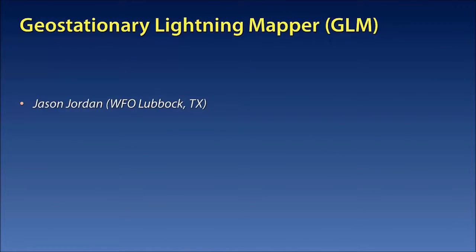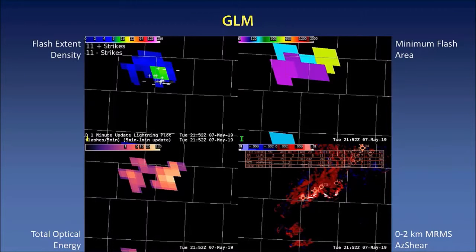Up next we have Jason Jordan from the WFO in Lubbock, Texas, and he will be talking about the Geostationary Lightning Mapper. We had an opportunity to look at several products that are not deployed in the field yet with the Geostationary Lightning Mapper, not only from GOES East, but also from GOES West. In this case, we'll be looking at just the GOES East imagery.